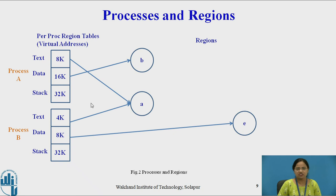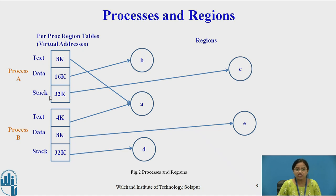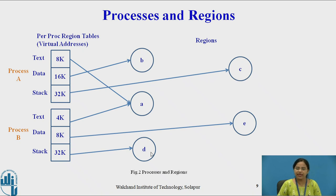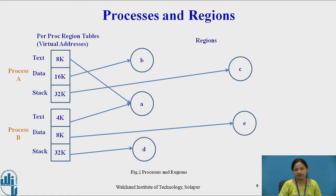The data and stack regions are private to each process. The data region for process A is B with virtual address 16K, and for process B is E with virtual address 8K. The stack region for process A is C with virtual address 32K, and for process B is D with virtual address 32K — the same virtual address, but different regions and different physical addresses. This illustrates how processes are related to regions and why virtual addresses must be translated into physical addresses.